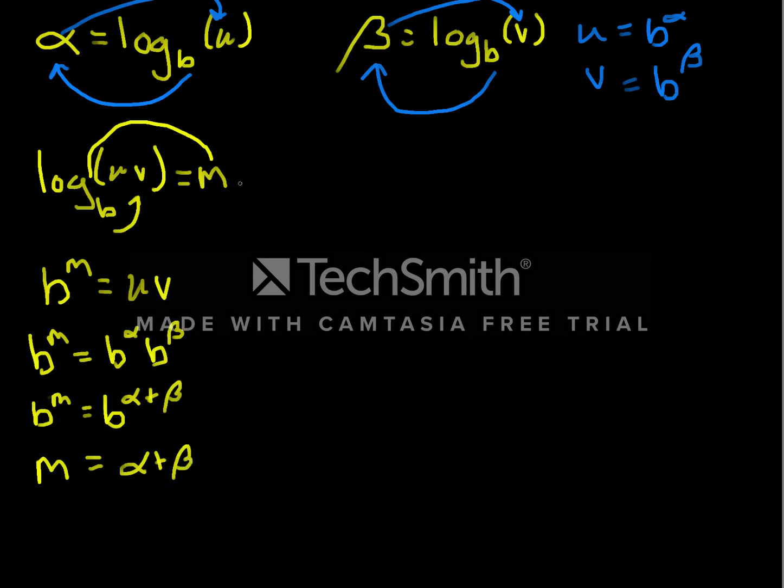Now, if I've got a number raised to m and the same number raised to alpha plus beta, and they're equal, the only way that can happen is if m is equal to alpha plus beta. But remember, m was our log base b of uv, alpha is log base b of u, beta is log base b of v. So now we get the famous rule that log base b of uv is equal to log base b of u plus log base b of v.